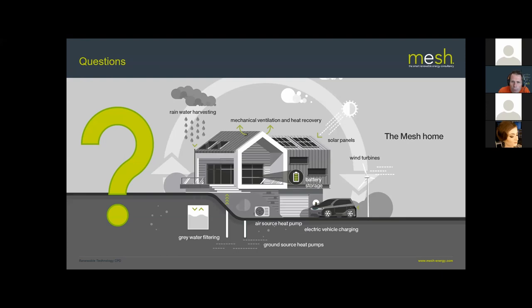Final question: can you use SAP or Passivhaus to size the heat pump system, or do you need room-by-room calculations? We always recommend room-by-room calculations. We use IES VE, building a full 3D model of the building. You can also do static heat loss calculations manually. We prefer IES because it allows us to model different systems, heat emitters, and the whole system dynamically, as well as cooling and many other analyses.